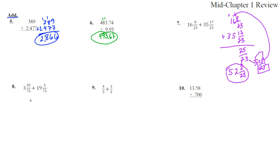Number 8, 3 and 55 71sts plus 19 and 5 71sts. Okay, so when we add those 55 and 5, that's 60 71sts. We don't need to carry any, that's great. 3 plus 9 is 12, carry a 1, 1 plus 1 is 2. 22 and 60 71sts, excellent.